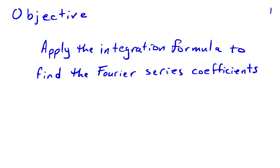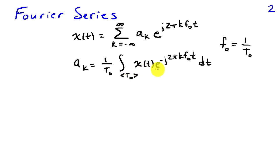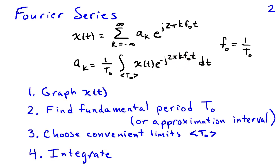Our objective in this video is to apply the integration formula to find the Fourier series coefficients. Recall that a signal x(t) can be expressed as a sum of complex sinusoids with complex amplitudes a_k, where the frequencies of the sinusoids are harmonics of the fundamental frequency — that's why the frequencies are k times f0. These coefficients are obtained using the integration formula: a_k equals 1 over T0, times the integral over some interval of length T0 of x(t) times e to the minus j 2π k f0 t dt.